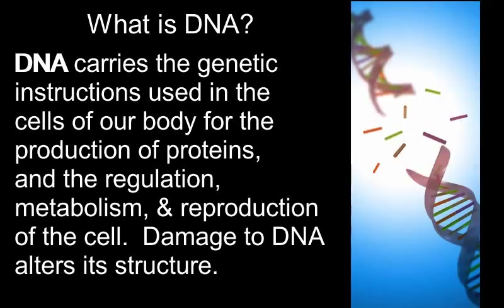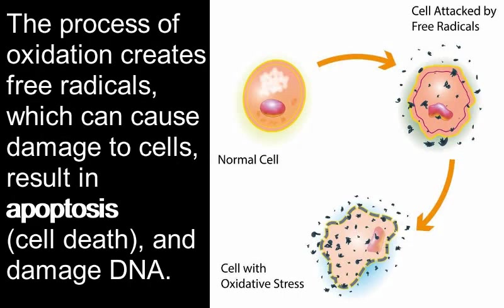Damage to DNA alters its structure. The process of oxidation creates free radicals which can cause damage to cells, result in apoptosis, or cell death, and damage DNA.